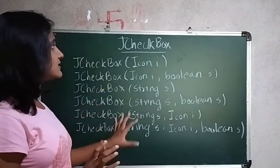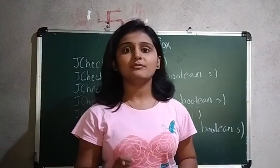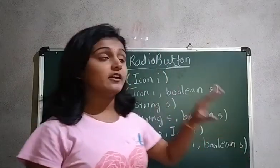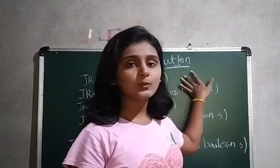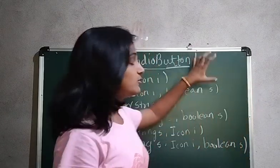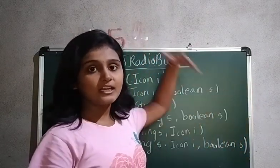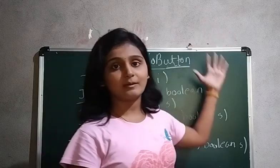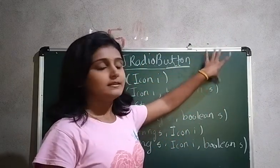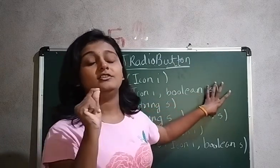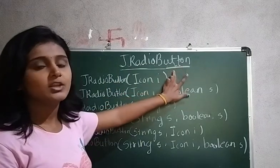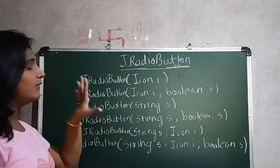Next we will see JRadioButton. As I mentioned for JCheckBox, its superclass was JToggleButton and above that was AbstractButton. In the same way, for JRadioButton the hierarchy is: AbstractButton → JToggleButton → JRadioButton. If you look at the constructors, they are very similar to those of JCheckBox.